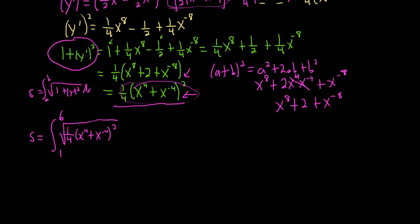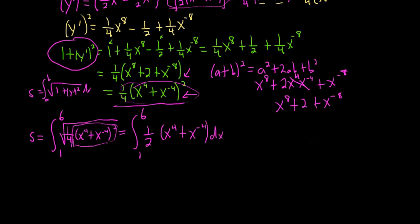Taking the square root of each piece: the square root of 1/4 is 1/2. When you take the square root of the squared expression, you get an absolute value, but since x varies from 1 to 6 everything is positive, so the absolute value goes away and you just get x to the fourth plus x to the negative 4. The square root of x squared is the absolute value of x, but since x is positive here, it's just x. This is worth mentioning for future problems.